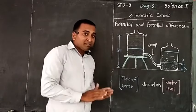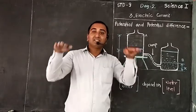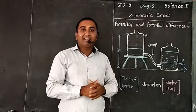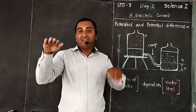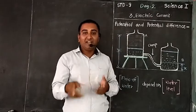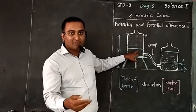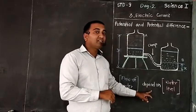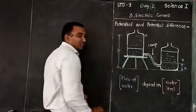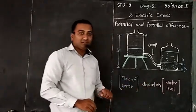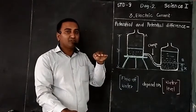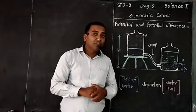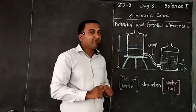When both points have the same potential level, current will not flow. Wherever there is a difference in level, there is flow. So flow of water is totally dependent on water level — wherever there is a difference in level, only then we get the flow. Similarly, this is applicable to electric current: current flows when there is a difference in potential.